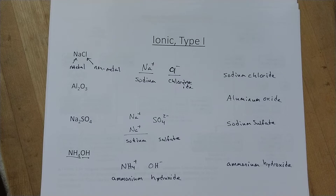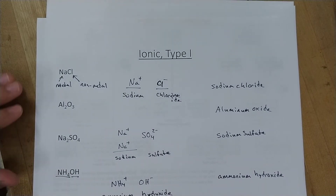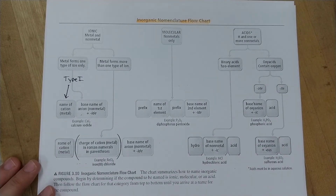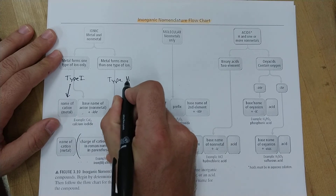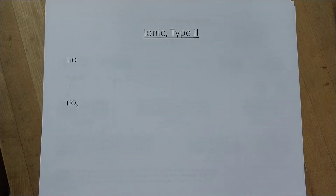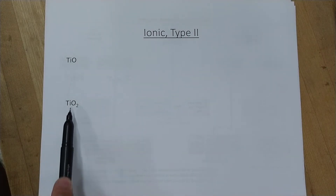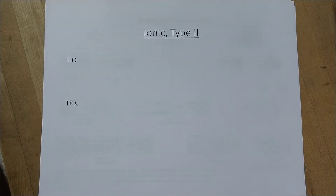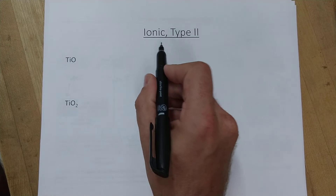Now we move on to ionic Type 2. It works just like Type 1 except there's a problem: two compounds are both made of titanium and oxygen. If we just called them both titanium oxide we couldn't tell them apart. So we need a different naming approach based on what the compound is actually made of. We know it's ionic because titanium is a metal and oxygen is a non-metal.